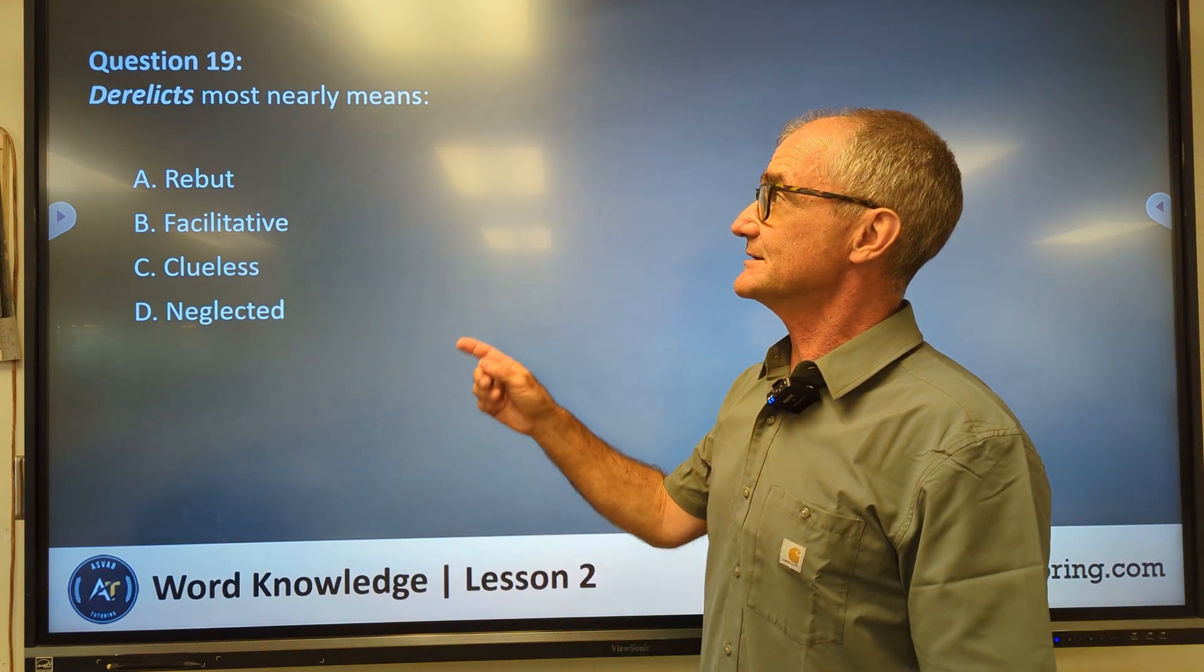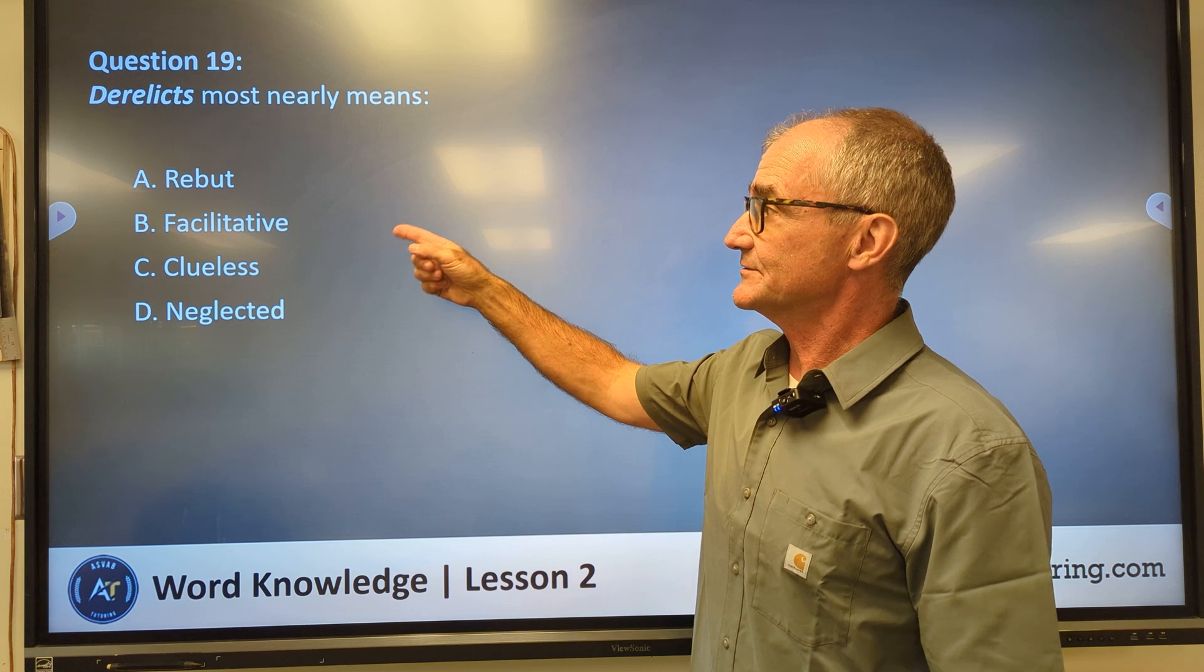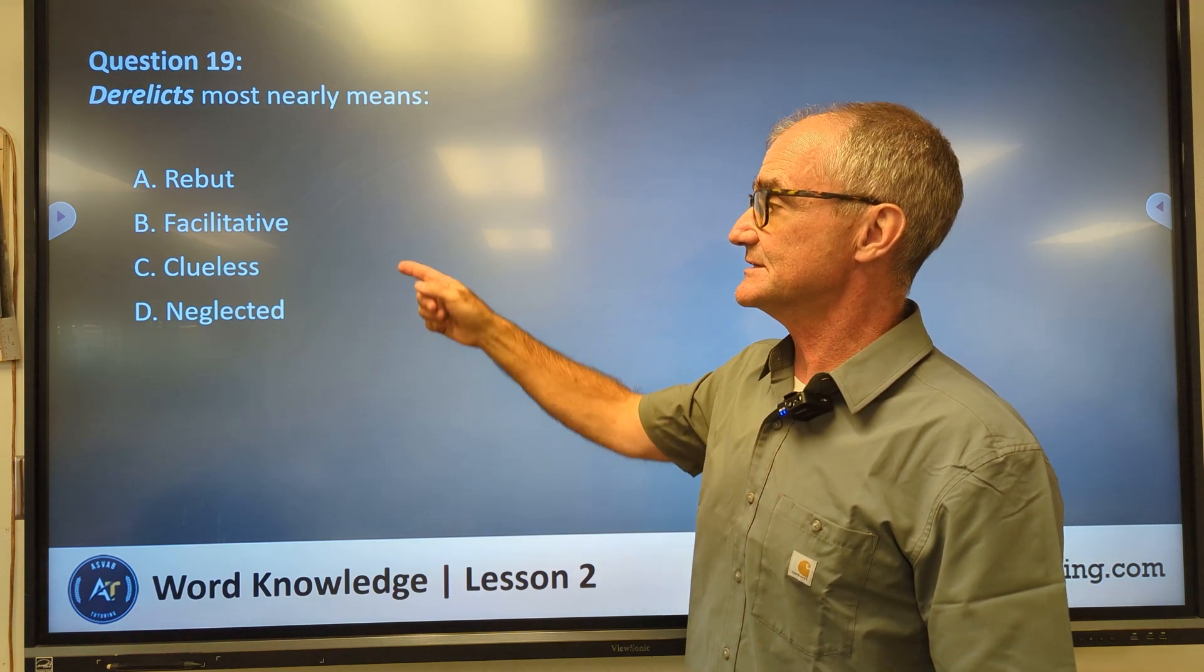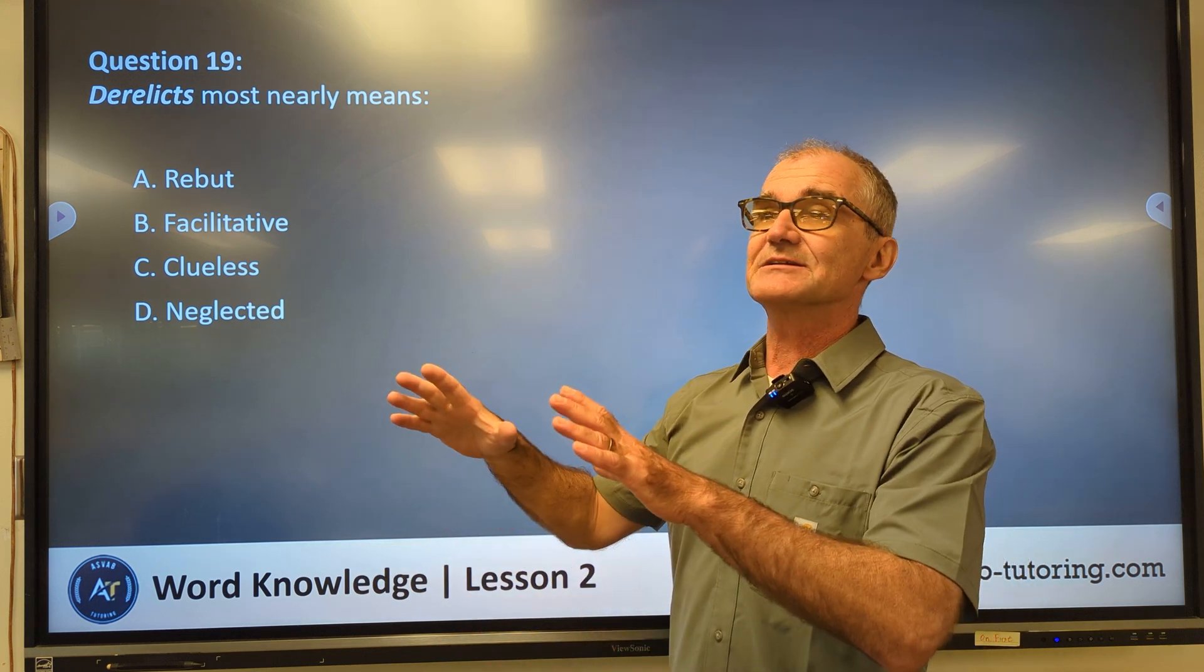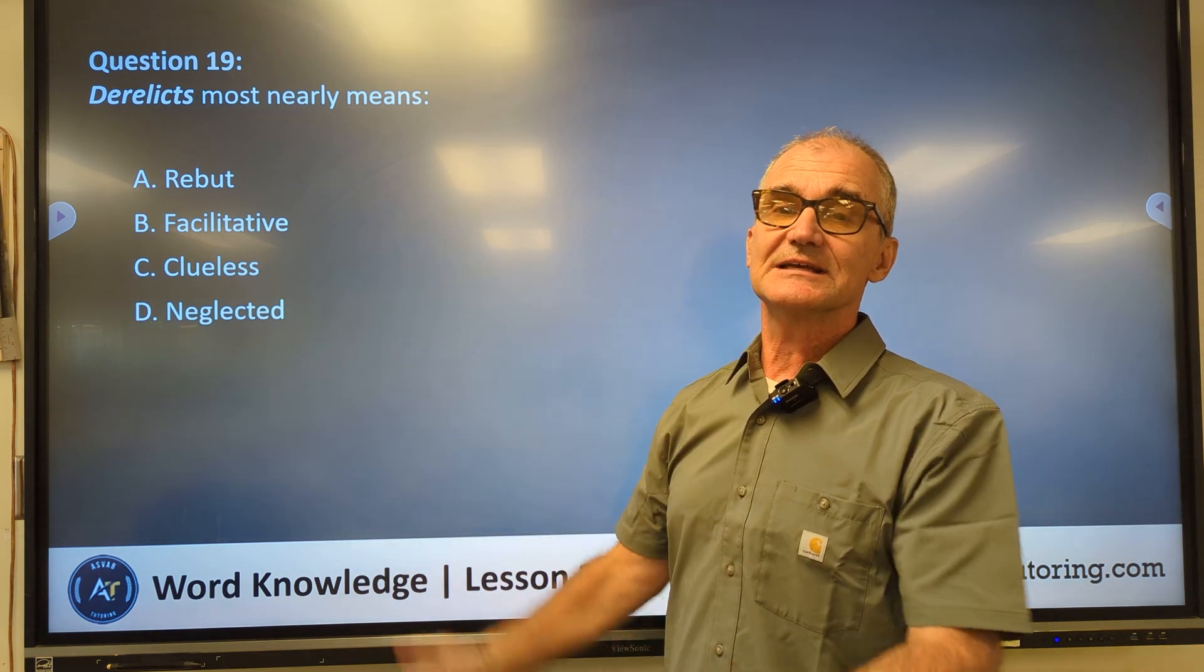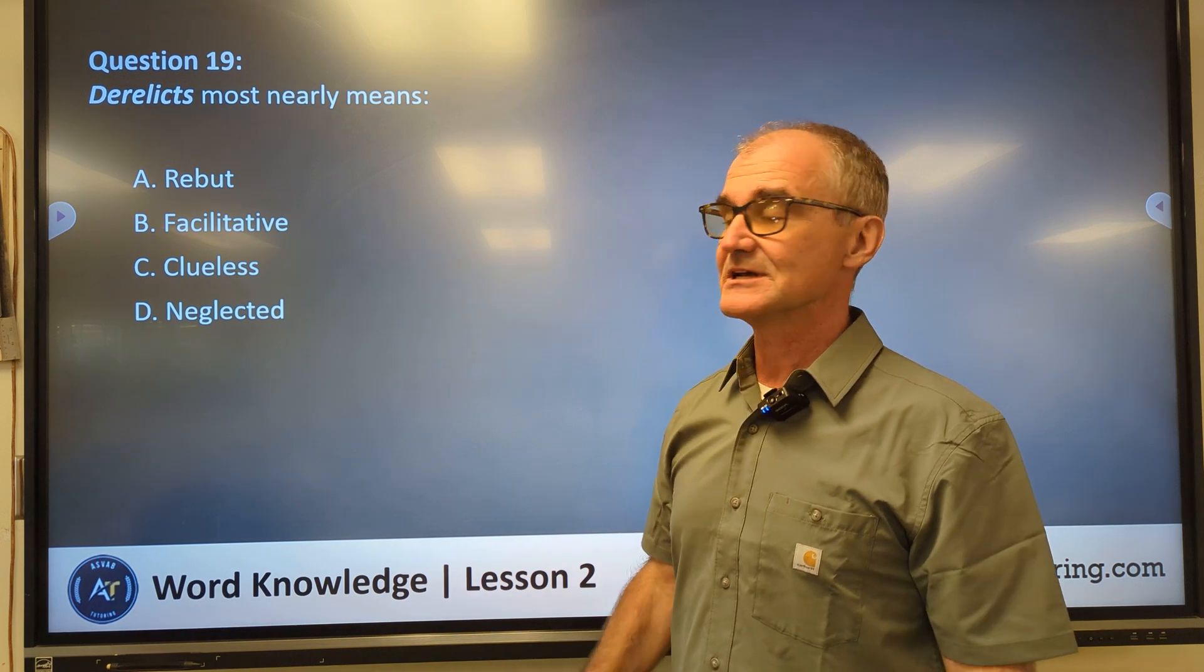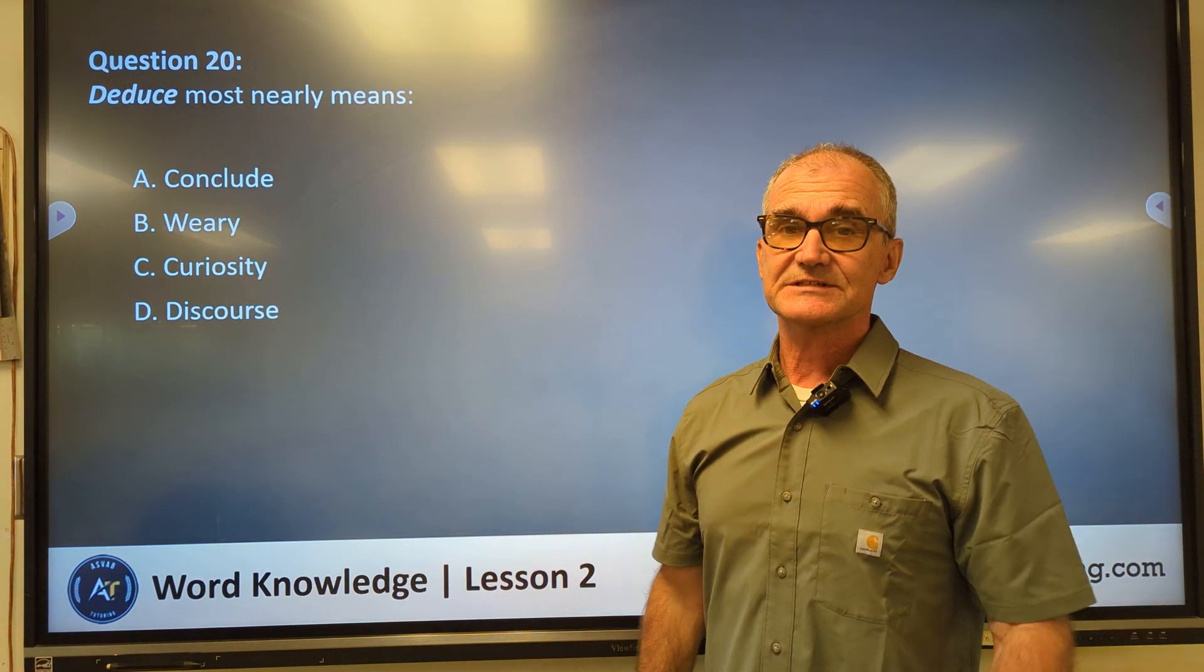Number nineteen, derelicts, most nearly means rebuke, facilitative, clueless, neglected. I think of a derelict ship, a ship out at sea with nobody running it. The ship is completely neglected. No one's in charge. So derelict and neglected have...